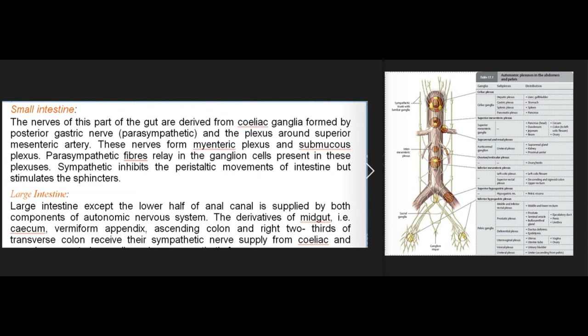Small intestine: the nerves of this part of the gut are derived from coeliac ganglia (via posterior gastric nerve/parasympathetic) and the plexus around the superior mesenteric artery. These nerves form the myenteric plexus and submucous plexus; parasympathetic fibers relay in the ganglion cells present in these plexuses. Sympathetic inhibits the peristaltic movements of the intestine but stimulates the sphincters.